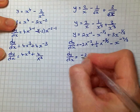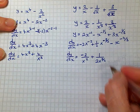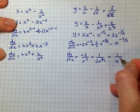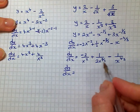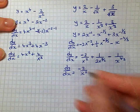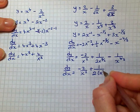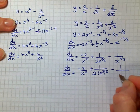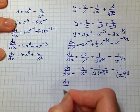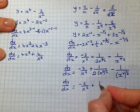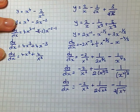So dy/dx — now making our indices positive — is minus 2 over x squared, plus 1 over 2x to the power of 3 over 2, minus 1 over x to the power of 4 over 3. To finish it off properly and get rid of the fractional powers, using the laws of indices: dy/dx equals minus 2 over x squared, plus 1 over 2 times the square root of x cubed, minus 1 over the cube root of x to the power of 4.